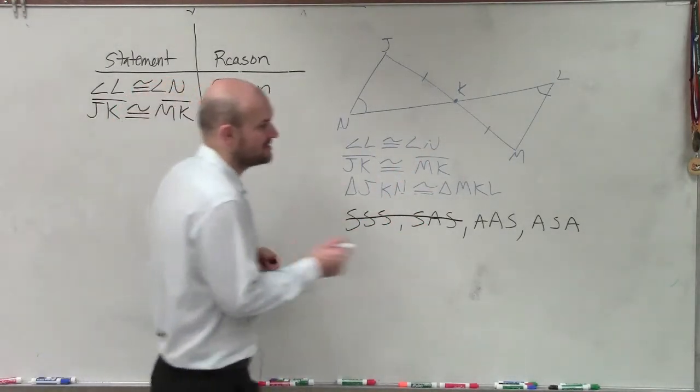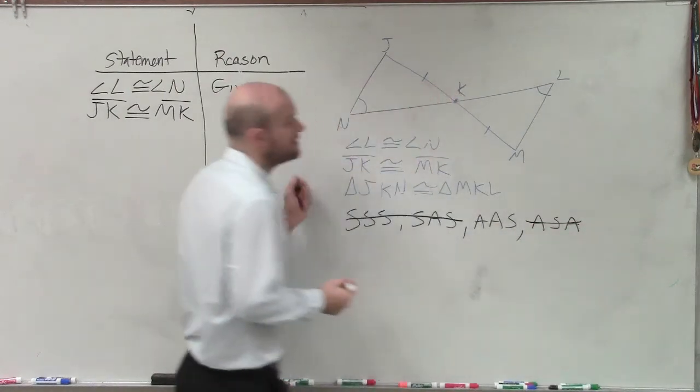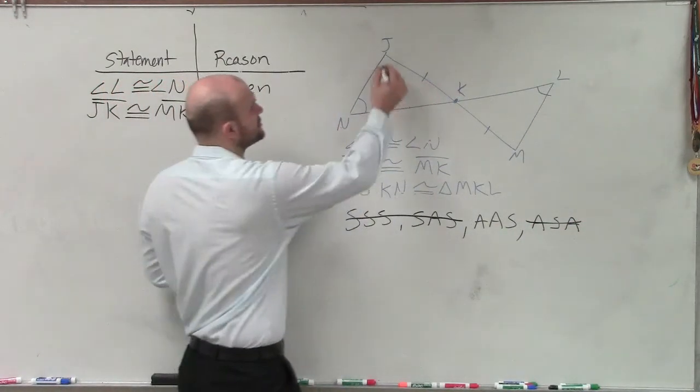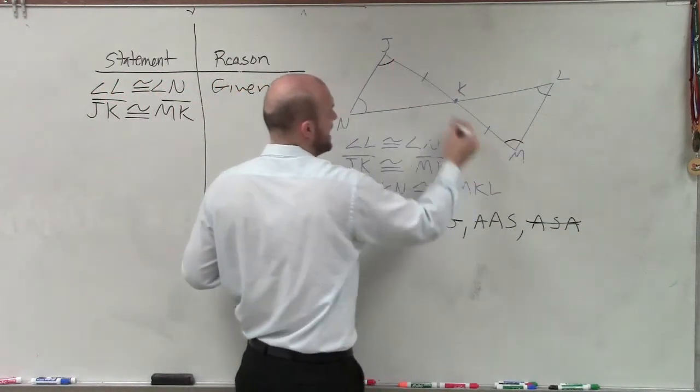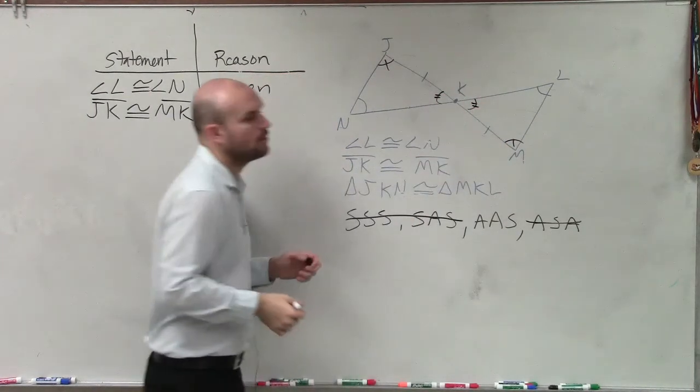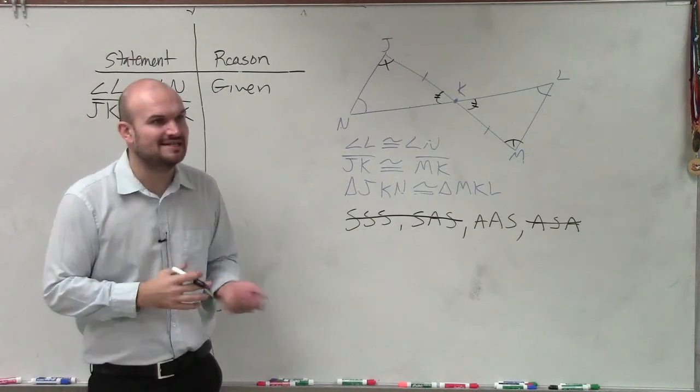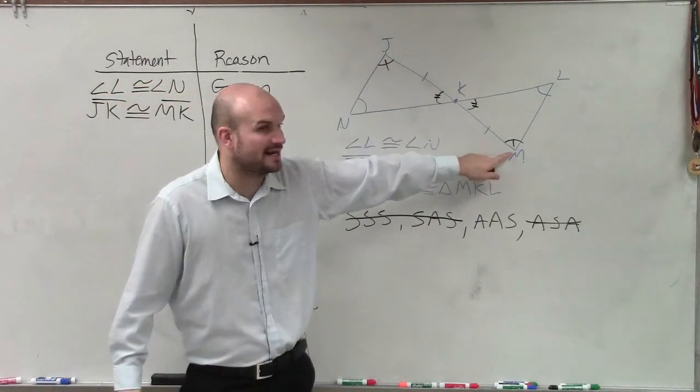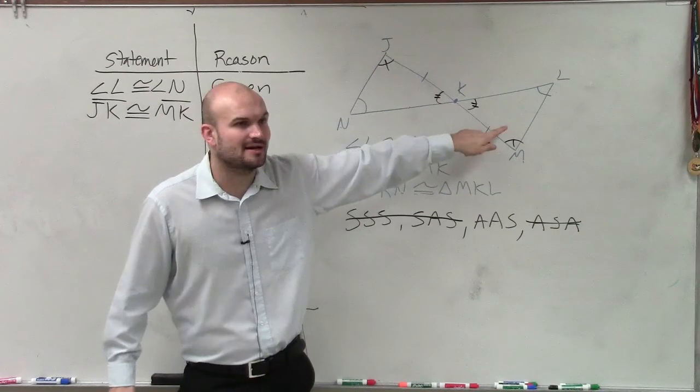So the only thing I can do is use angle-angle-side. So now I need to look at this and say, alright, so that means I need to show that that is equal to that or that is equal to that. So which one do you guys think I'm going to be easiest to be able to prove? That angle is equal to that angle or that angle is equal to that angle?